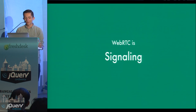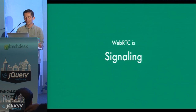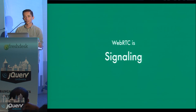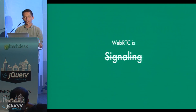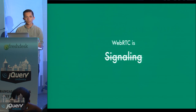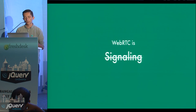In the code examples earlier, there was a to-do note for actually passing the answer and offer messages between peers — this is where a signaling server comes in. WebRTC ends here and we're left to implement our own mechanism for communication. Typically you'd set up a WebSocket connection to a central server, and that server will exchange the signaling messages between users. That's all code you have to write yourself.